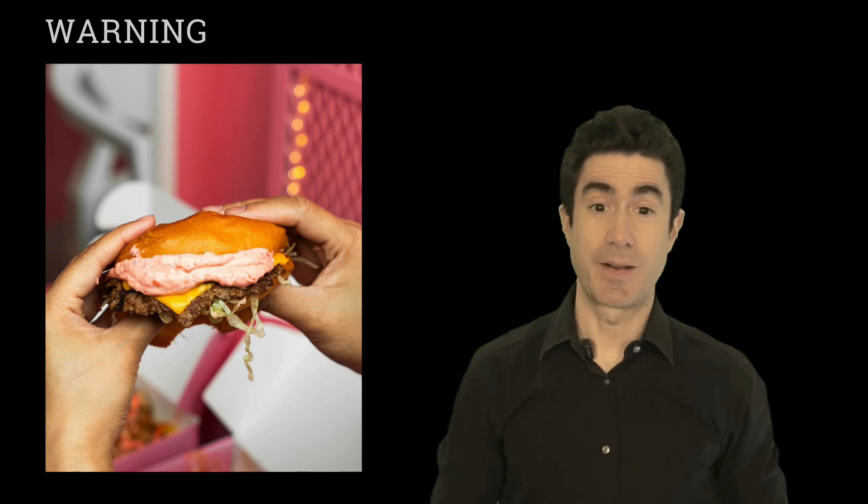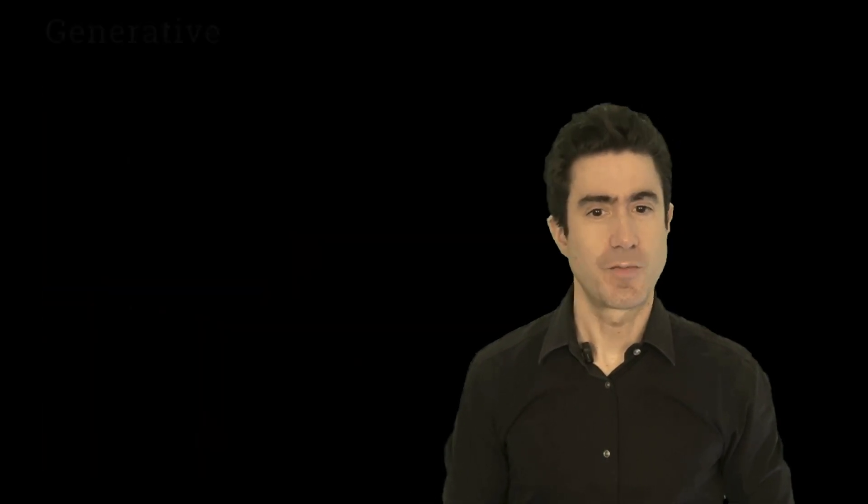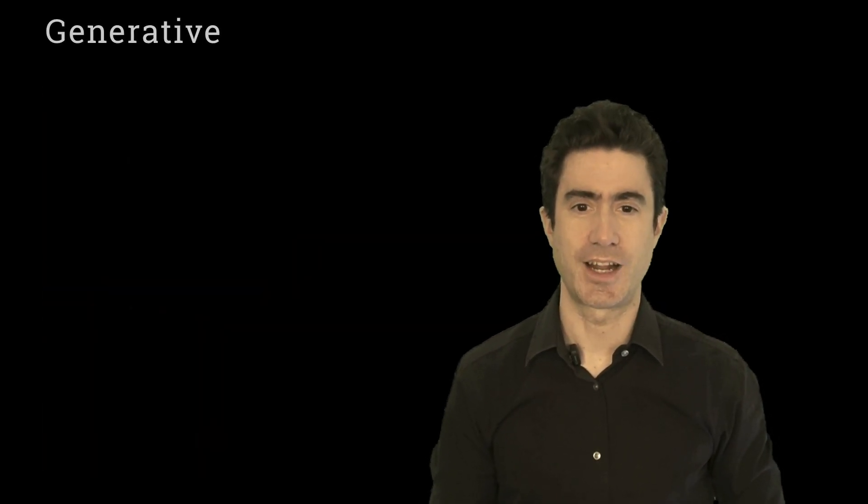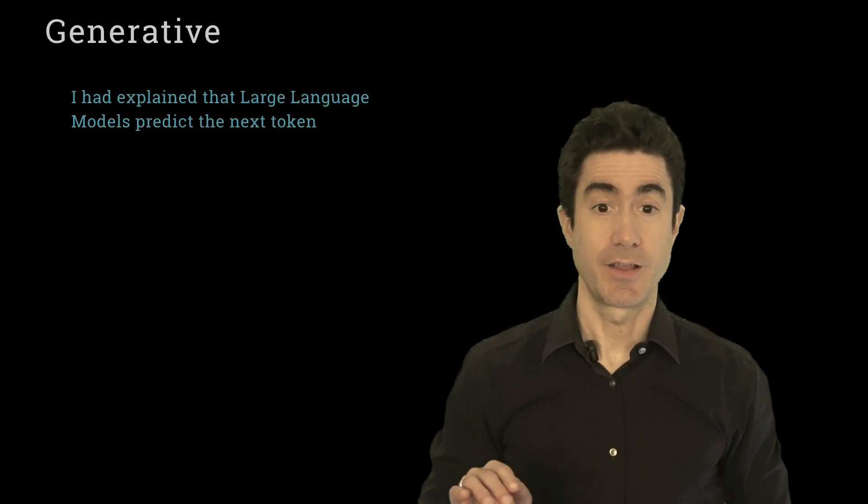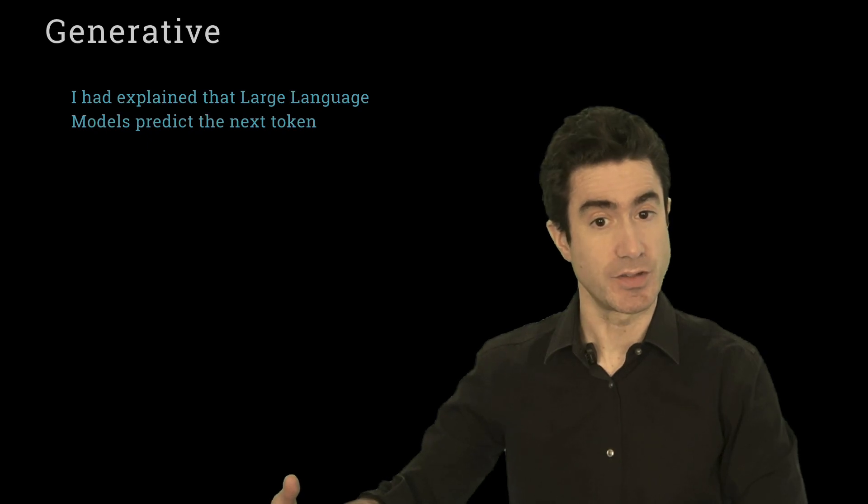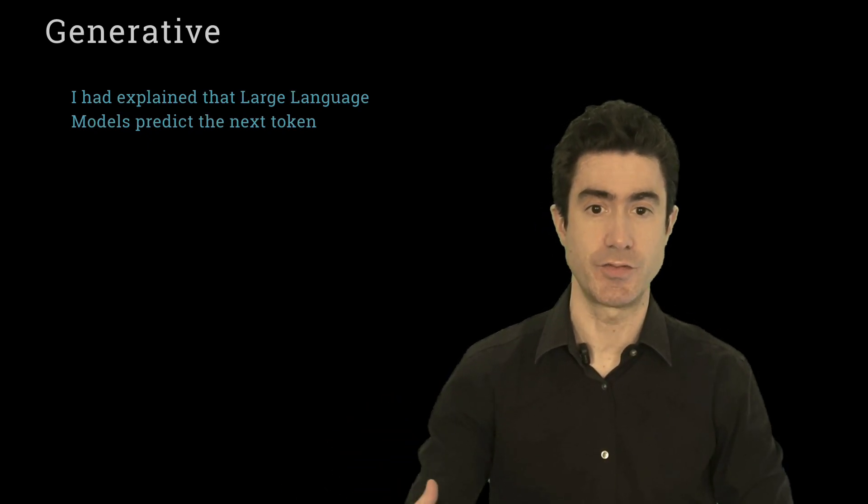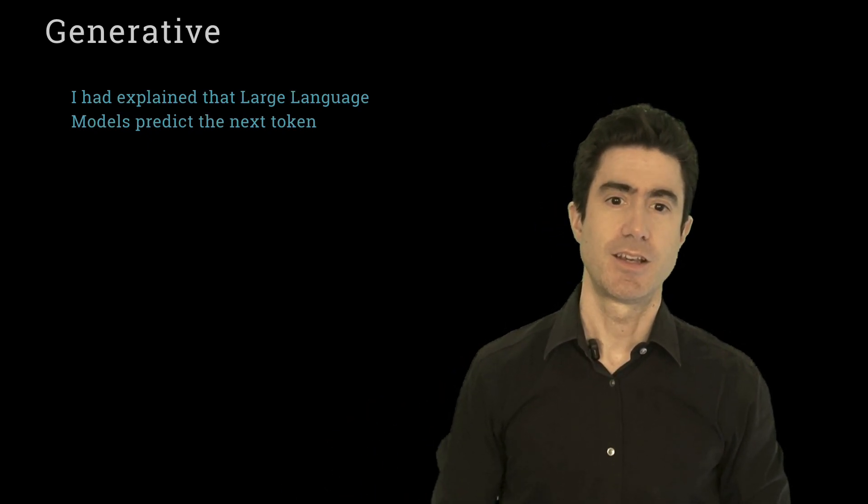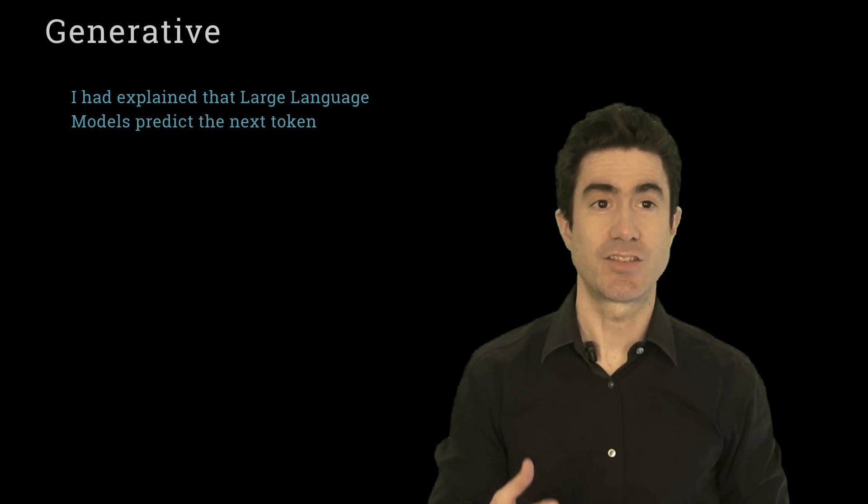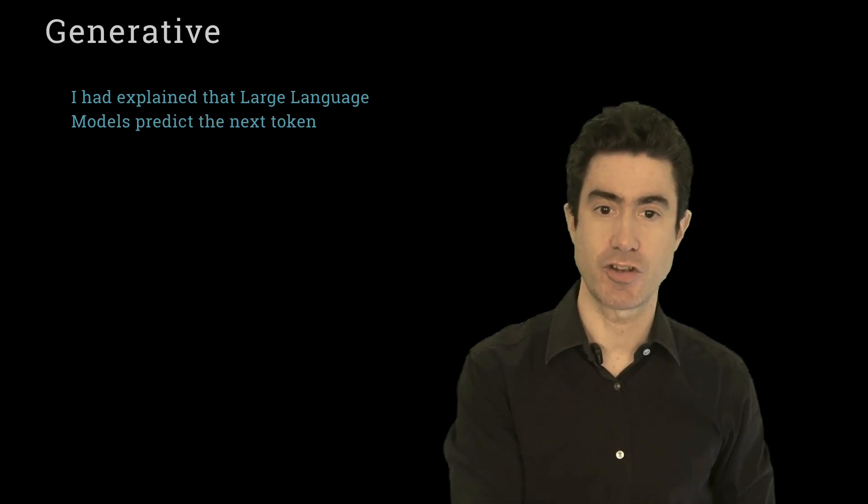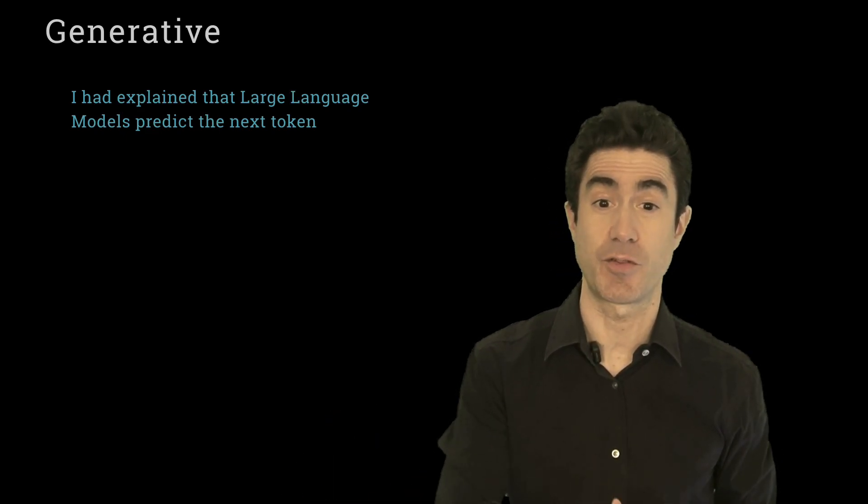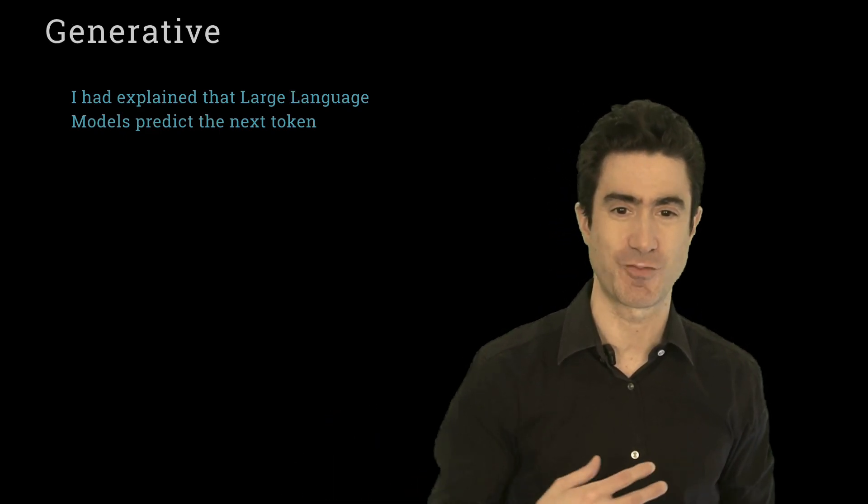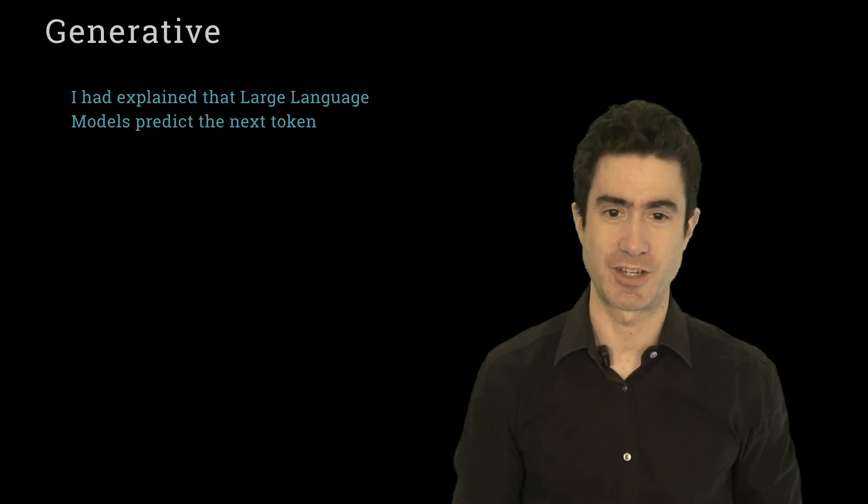So let's start by talking about generative. So you remember last time I talked about large language models as being models which are trained a particular way. They're trained to expect inputs in the form of a series of tokens or chunks of characters. And their output is the most likely next token to follow immediately after the input. That's just the way they're trained. That's what they're trained to do. That's what they learn from data to achieve.